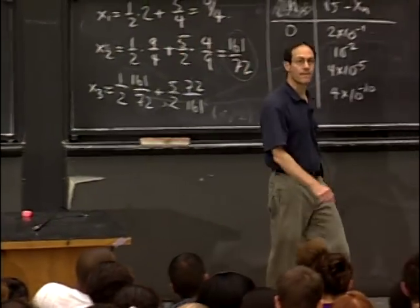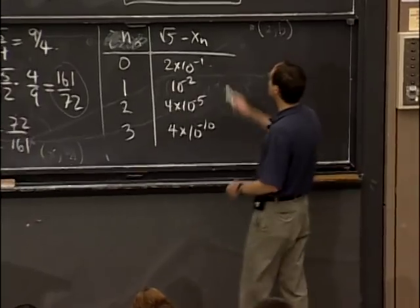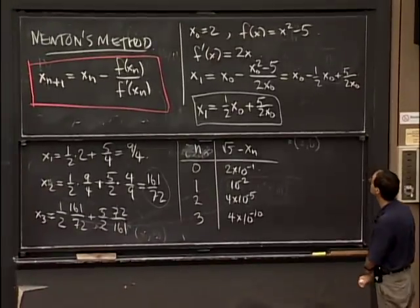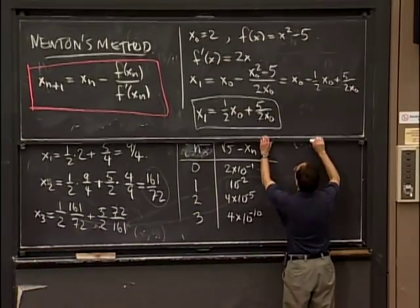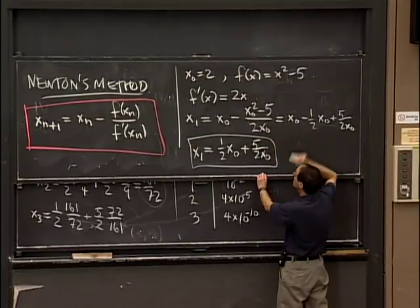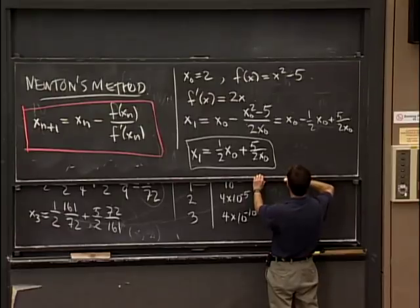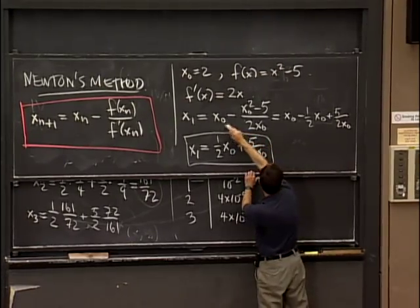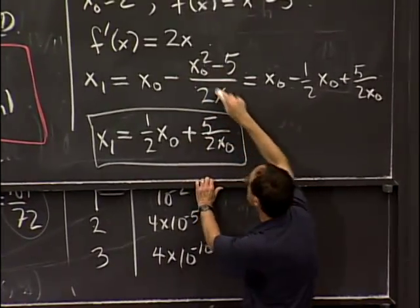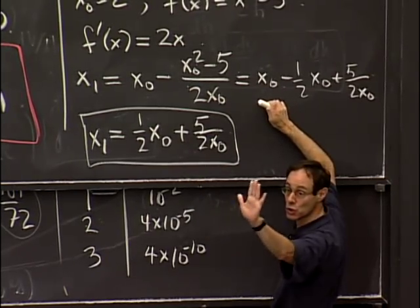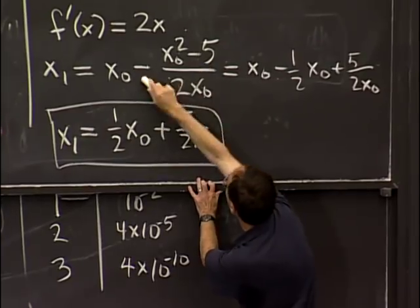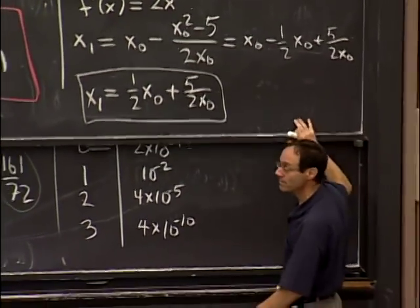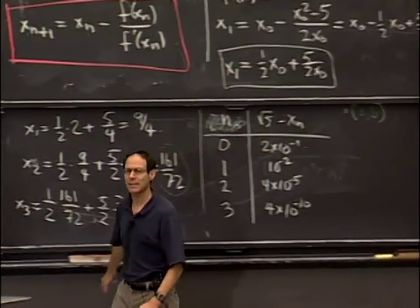Student question: how come the x0 terms simplify? Answer: you have x0 minus one-half x0 which gives plus one-half x0, and the 5 halves over x0 is the second term. Those two terms combine to give one-half x0 plus 5/(2x0). That's all — the 1 minus 1/2 gives plus 1/2.